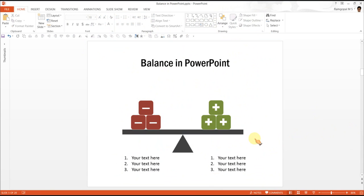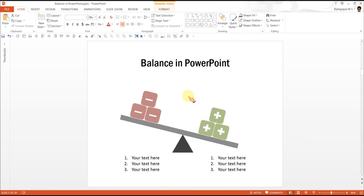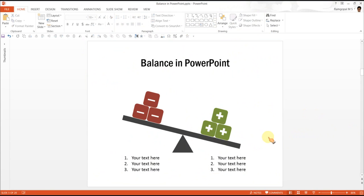Now if I want to show the balance favoring positives, all I need to do is to select all of this. Press control G so it forms a group. Now you can use this rotate handle to rotate this. As we rotate, you can see that the center point has shifted. So I am going to move this slightly to the right. There it is, the balance is tilted in favor of positives.